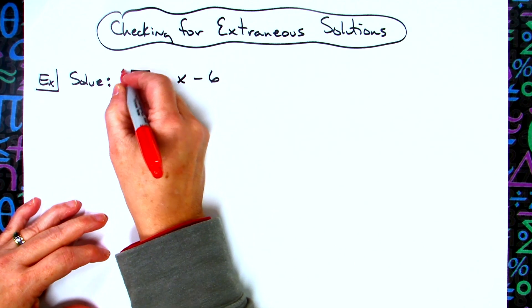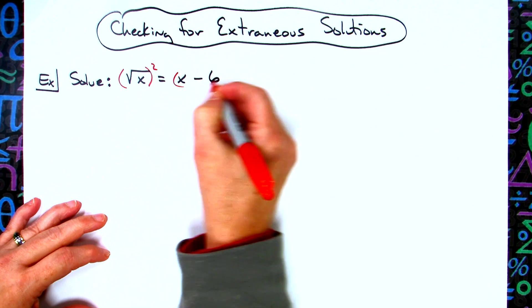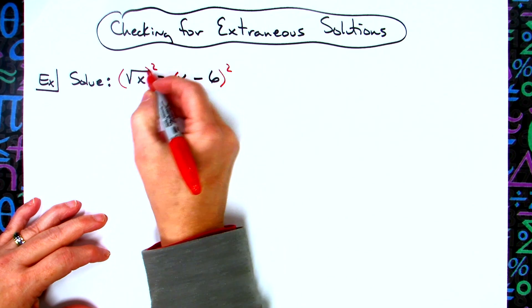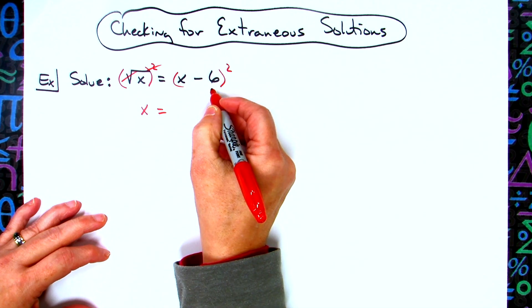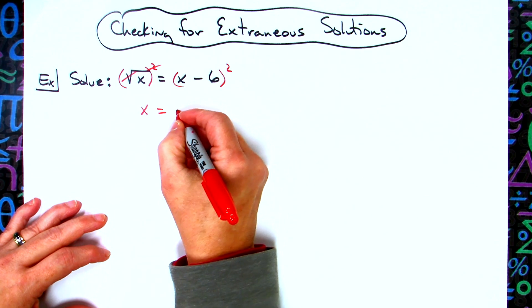In this equation, the first thing I'm going to do to solve this would be to square both sides. The square root and the square on the left hand side is going to go away. This is going to be an (x - 6) times an (x - 6), so basically we're going to be foiling that out. Then we're going to have an x² - 12x + 36.